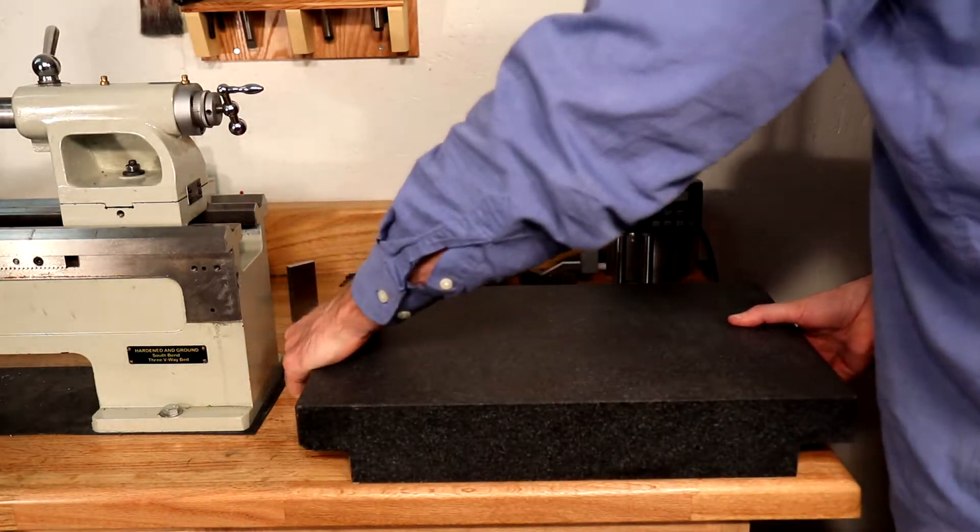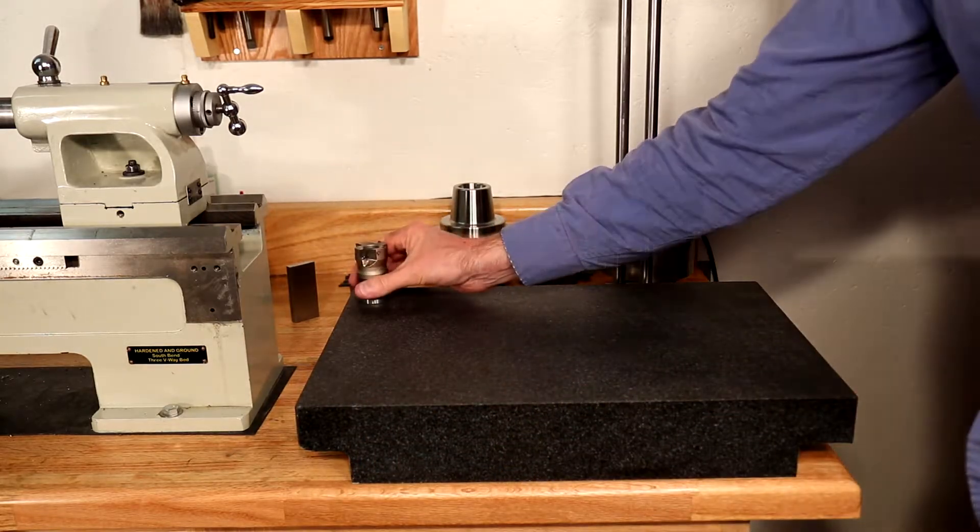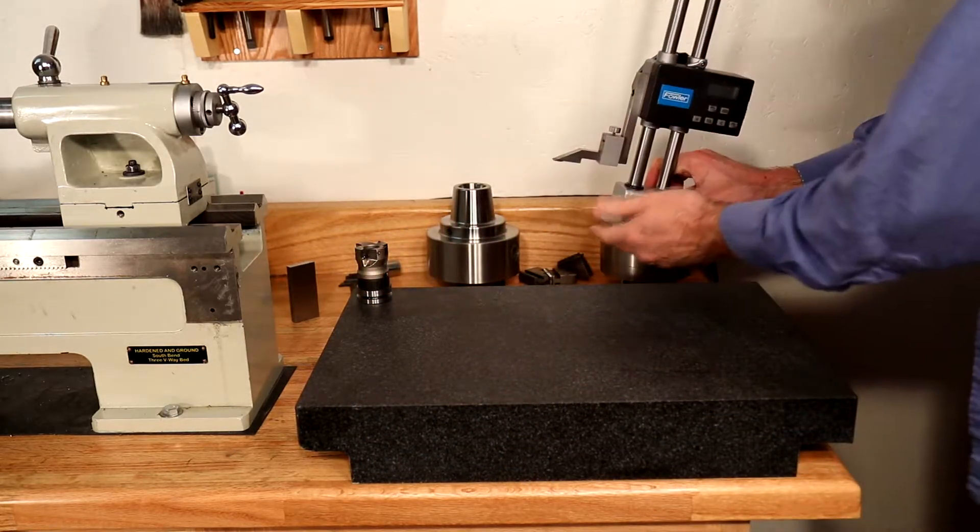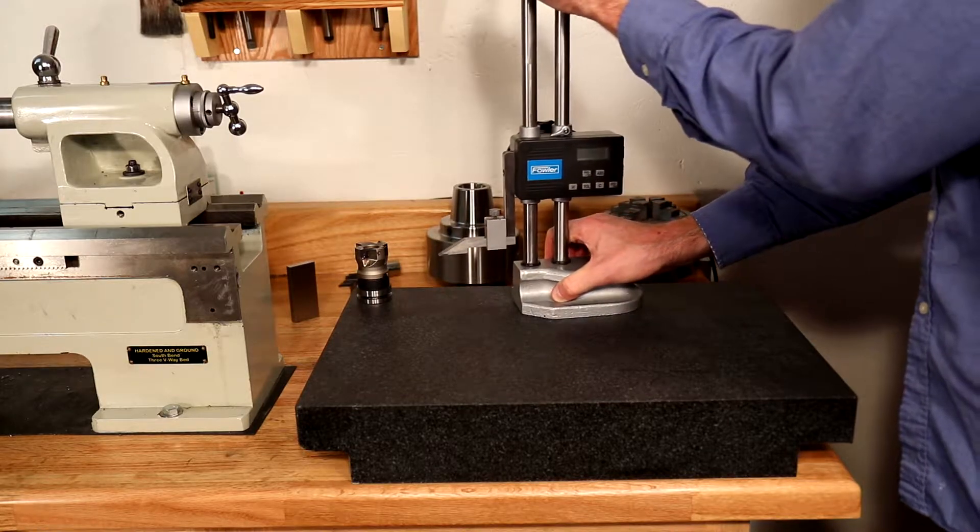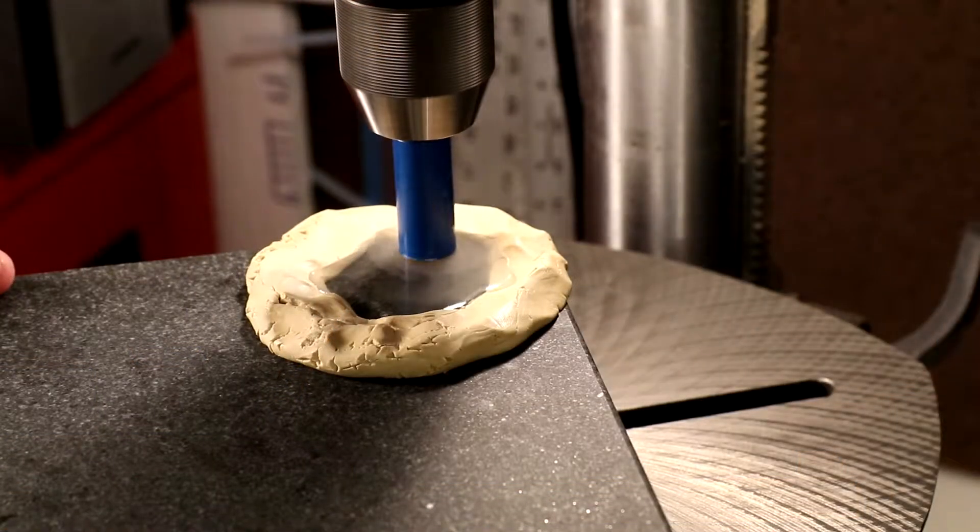A larger surface plate has many more uses than the specialized TTS surface plate, but larger surface plates don't normally have a hole drilled to receive the TTS tool shank. Today we'll drill that hole.